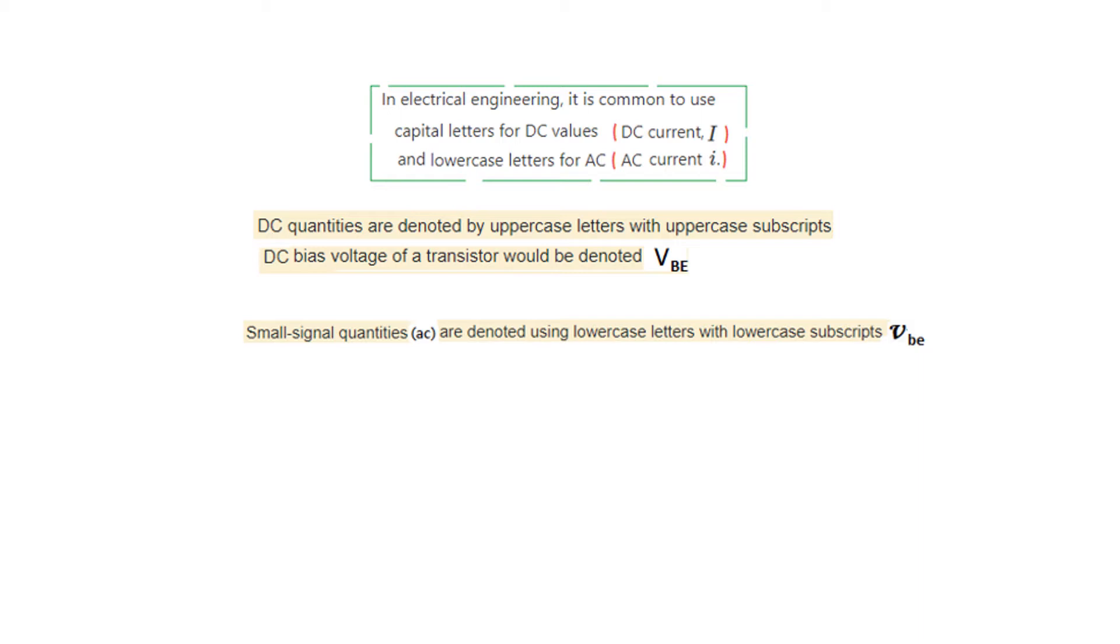There are circumstances where both DC and AC signals are applied, DC for biasing and AC for amplification. In that case, the total quantities combining both AC signals and DC quantities will be written as small v but capital B, E. This is called the instantaneous value, which has the combination of both DC and AC. This convention you have to keep in mind.